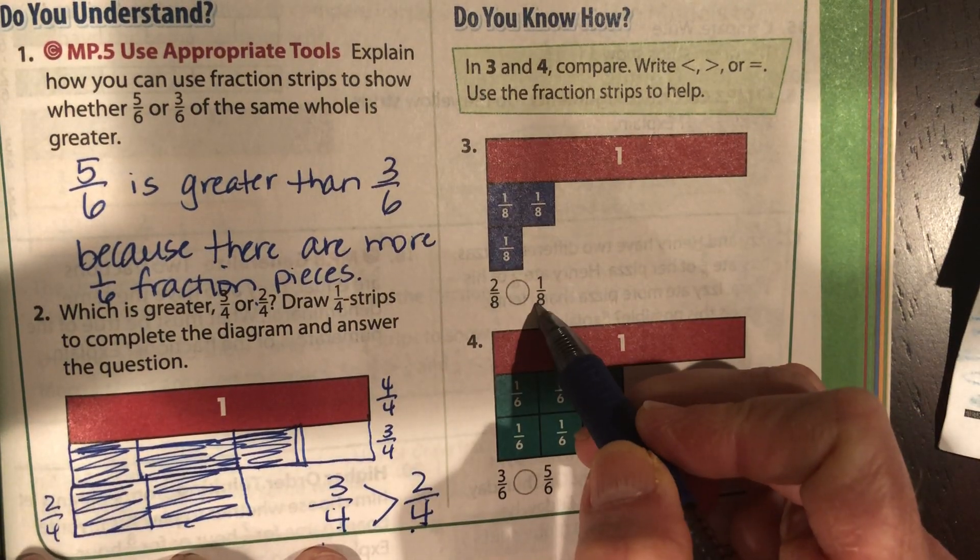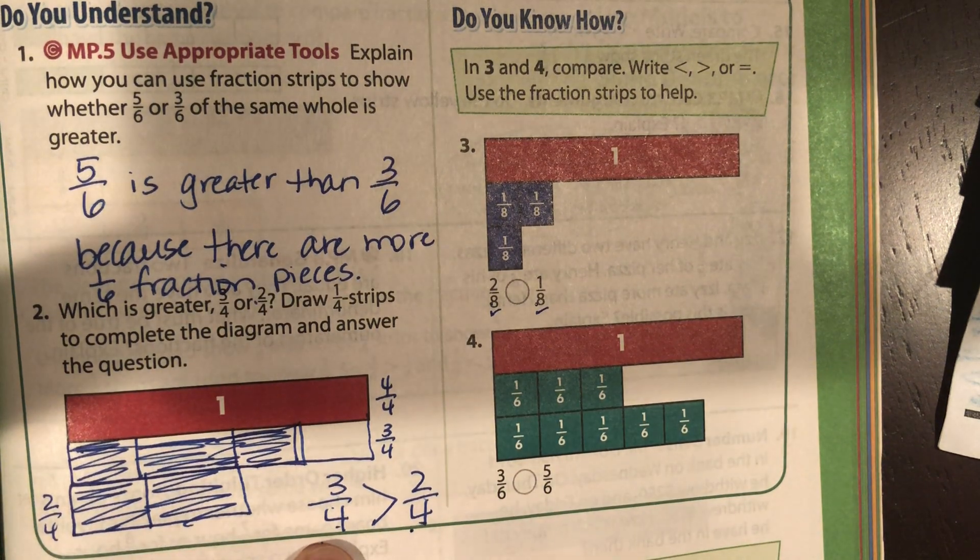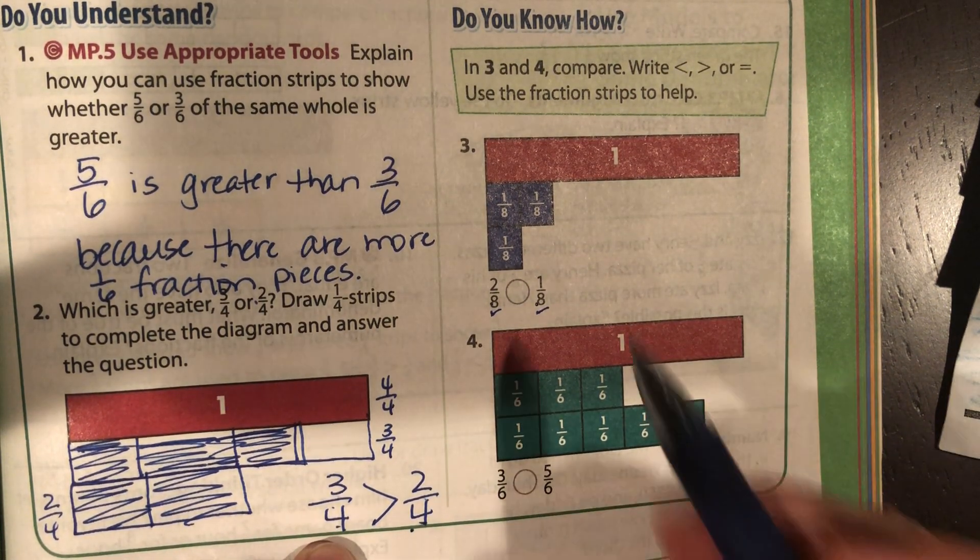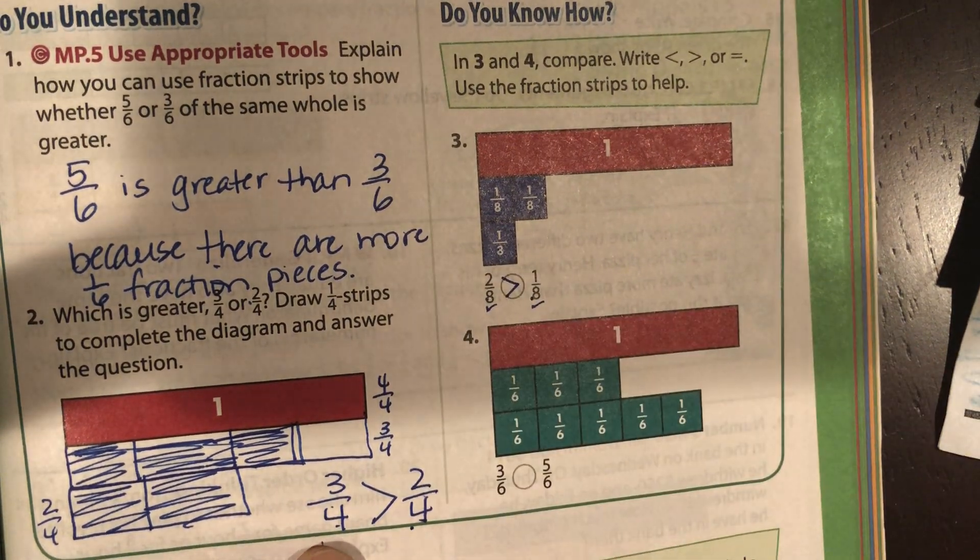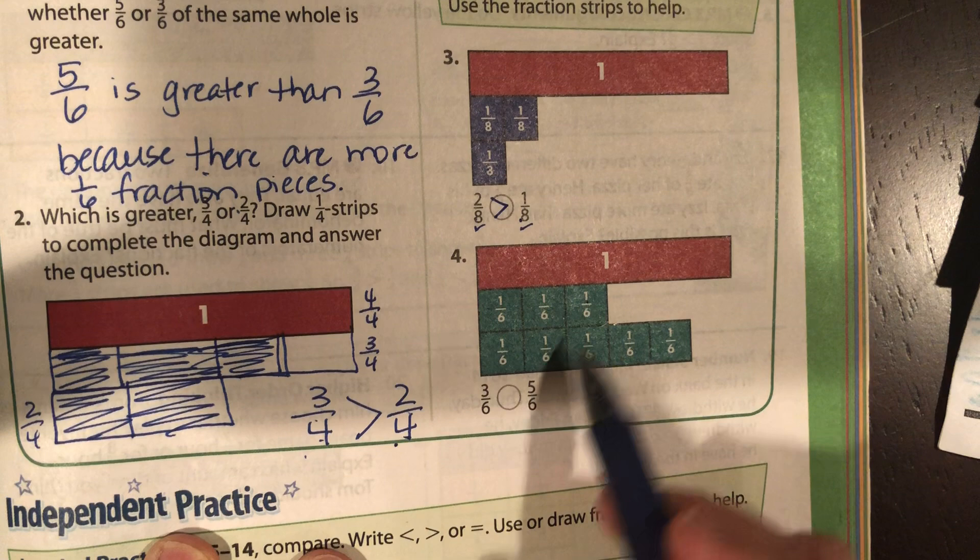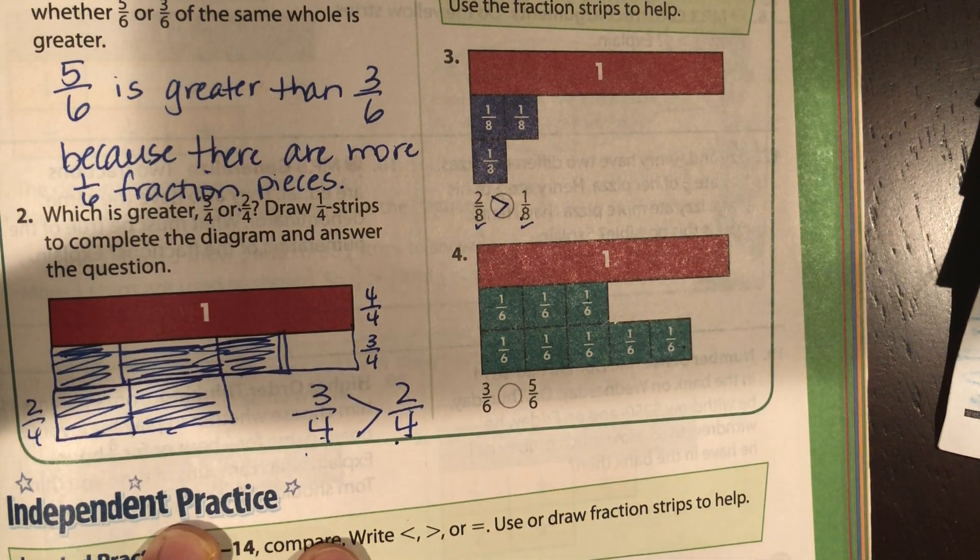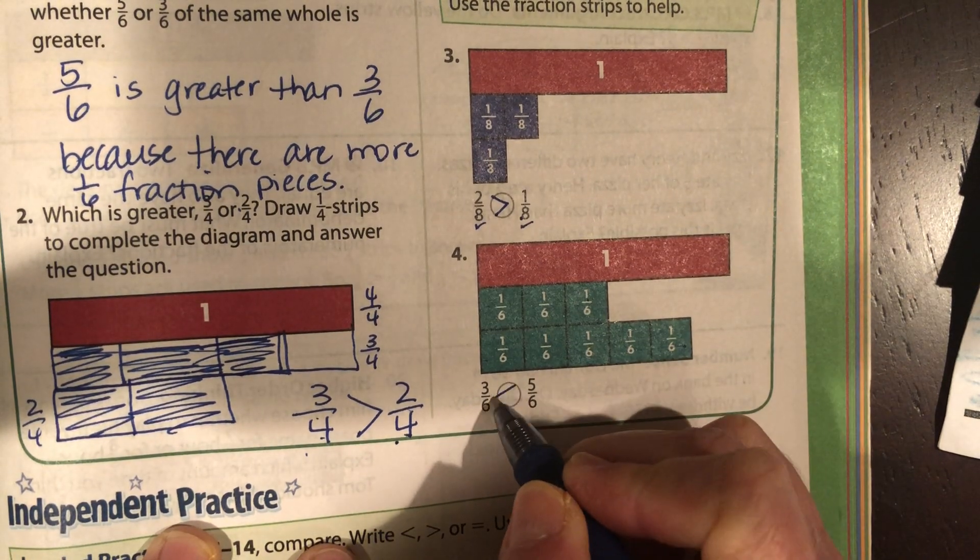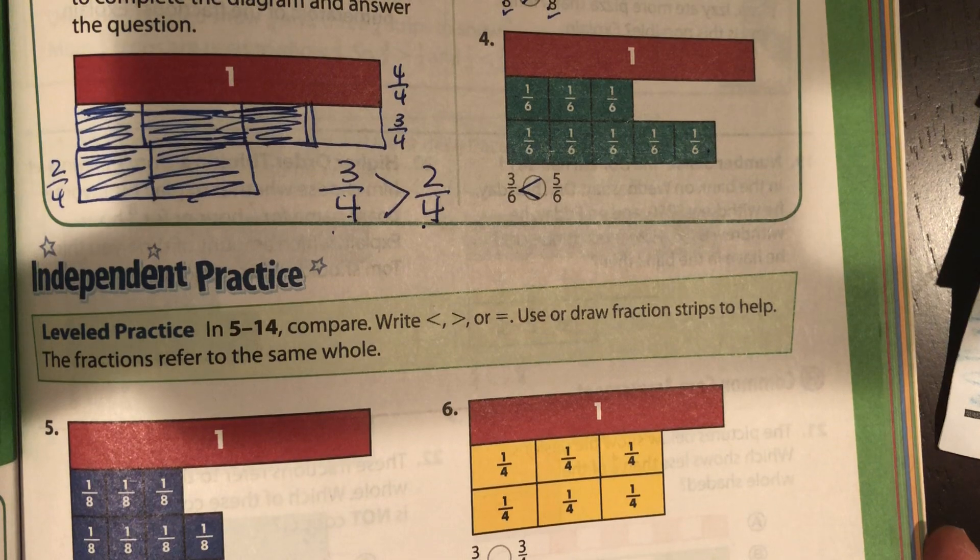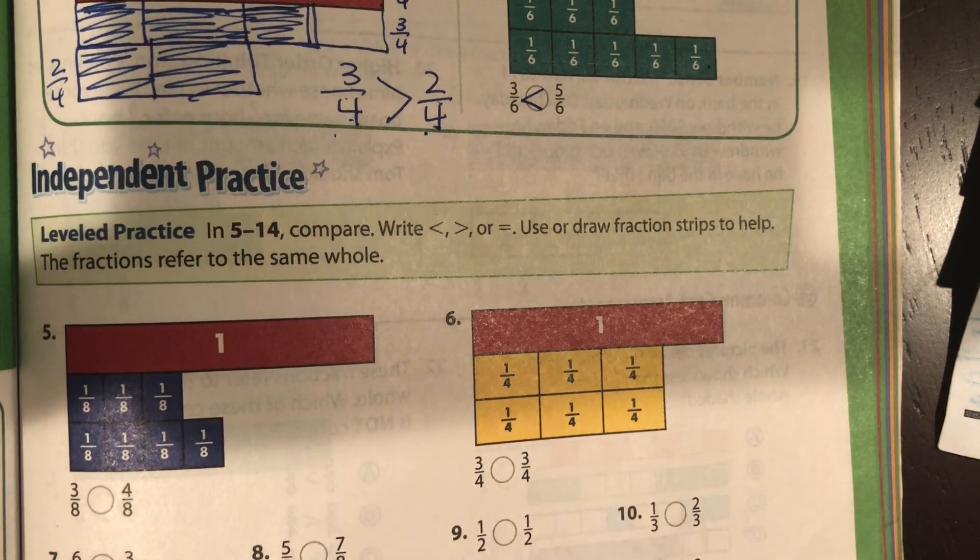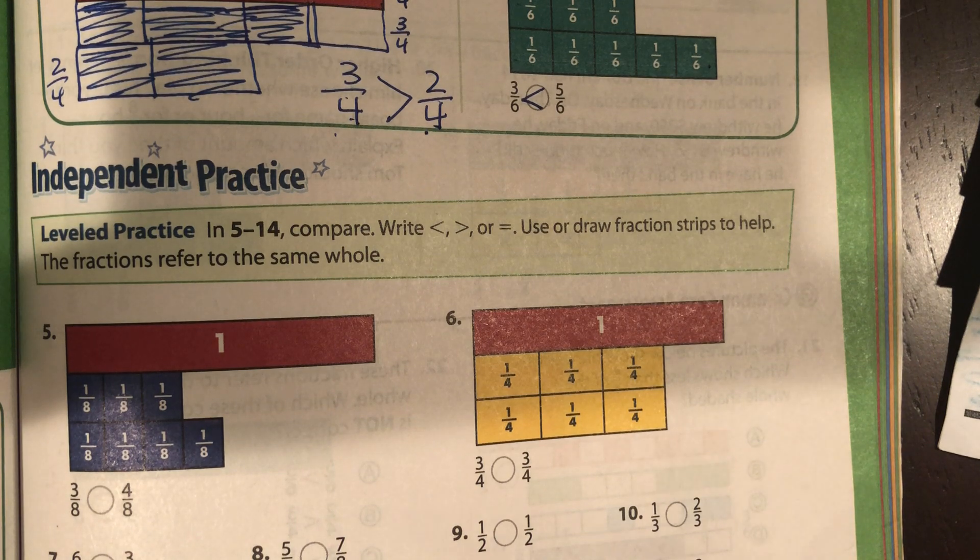Two-eighths compared to one-eighth. Check your denominators are the same. This is like subtraction without regrouping. Two is greater than one. Two-eighths is greater than one-eighth. Three-sixths compared to five-sixths. Pause it and fill that one in. Should be that. Now I want you to pause it right here. I want you to do the independent practice on the front and the back, and then come back and correct it with me.